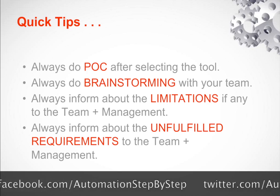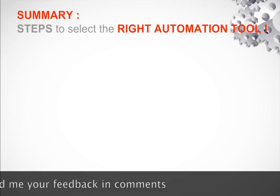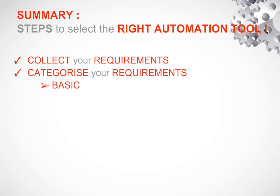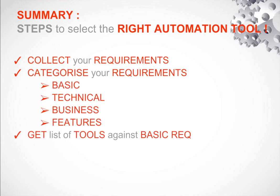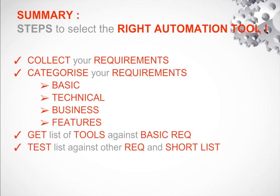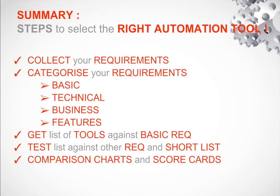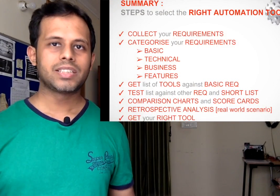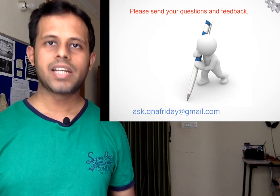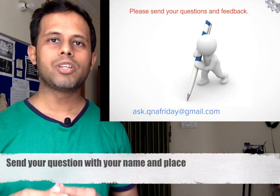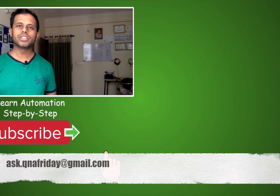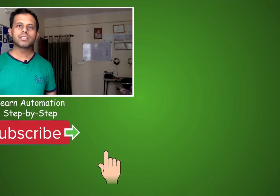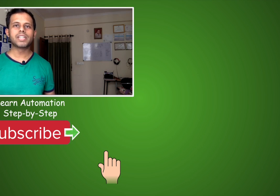To summarize: collect your requirements, categorize them into the four categories, get a list of tools against basic requirements, test that list against other requirements to shorten it, create a comparison chart and scorecards if required, and do a retrospective analysis if you already have a tool — and you will get your right automation tool. I hope you liked this session of Q&A Friday. Please send feedback in the comments, and send your questions with your name and place to ask.qnafriday@gmail.com. Don't forget to like, share, and subscribe — every subscription gives me great motivation. I'll meet you in the next session of Q&A Friday. Thanks for watching.